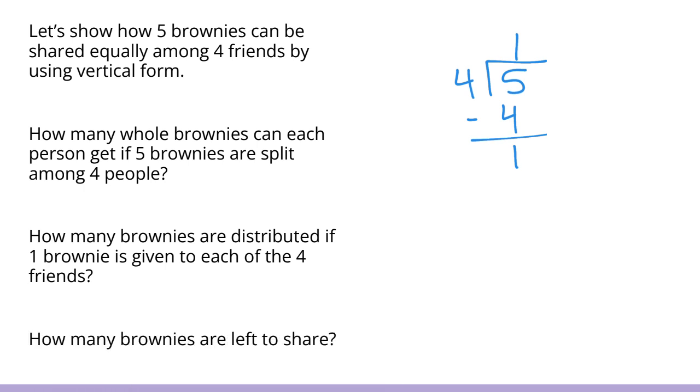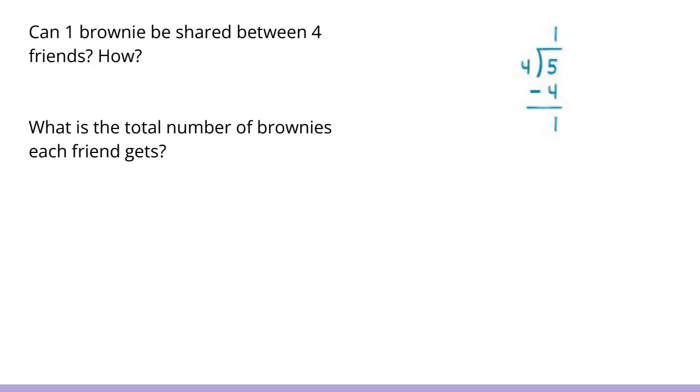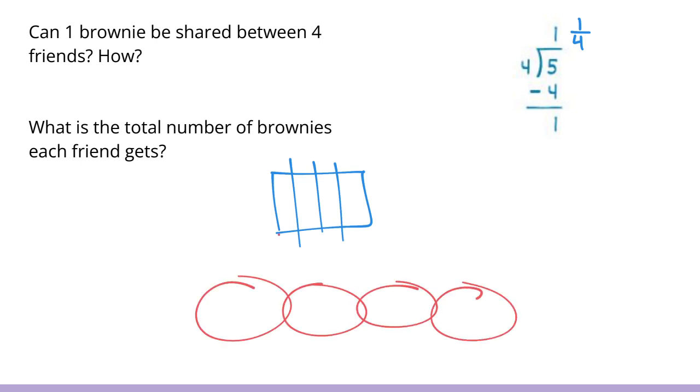How many brownies are left to share? We would have one brownie left to share, this one right here. The question now is how can one brownie be shared between four friends? That would give us each friend getting one fourth of a brownie. If I show one brownie divided into four parts, each friend would get one fourth of a brownie. Like so.